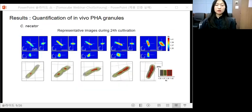After identification of in vivo PHA granule, the quantitative analysis was conducted. To understand the formation and growth of PHA granules, the C. necator cells were cultured for 24 hours to reach their maximum PHA accumulation and subjected to ODT analysis at 8-hour intervals. These are the representative images during the 24-hour cultivations.